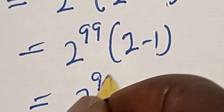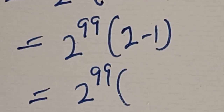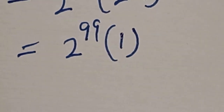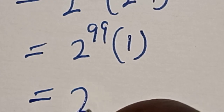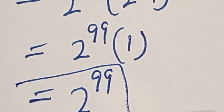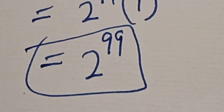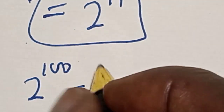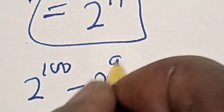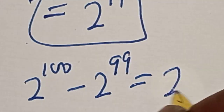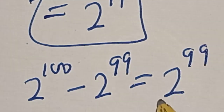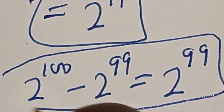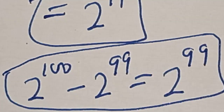Then this is equal to 2 raised to power 99 into 2 minus 1, which is 1. Then 2 raised to power 99 times 1 is equal to 2 raised to power 99 — that is our answer. Therefore, 2 raised to power 100 minus 2 raised to power 99 is equal to 2 raised to power 99. Before you leave, like, share, comment and subscribe. Thank you, bye bye.